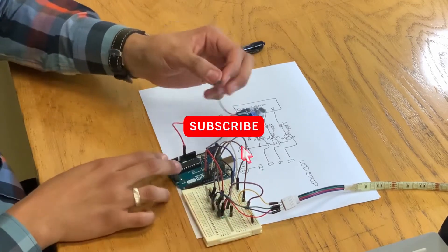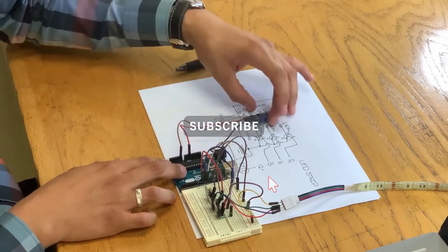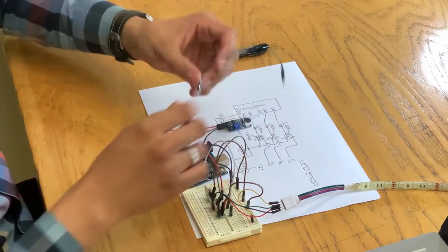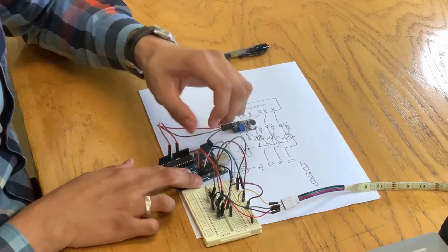Be sure to keep checking the schematic from our Instagram for any doubts in the connections. Now, we'll connect Arduino ground to our breadboard ground.